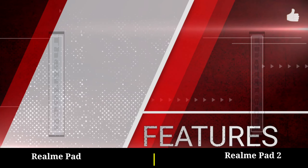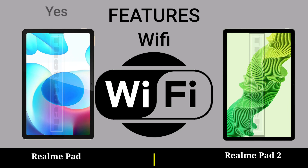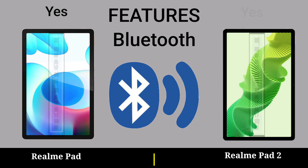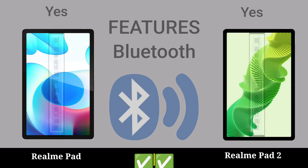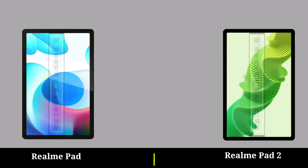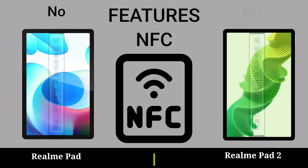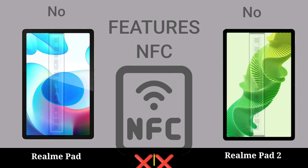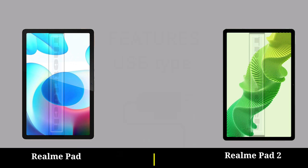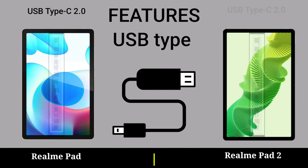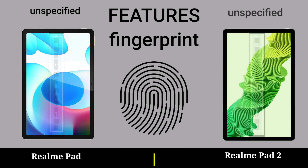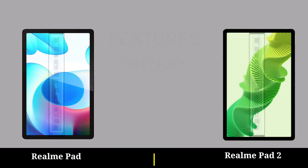Features: Wi-Fi. Bluetooth. GPS. NFC. Radio. USB Type. Fingerprint Link. Flags.